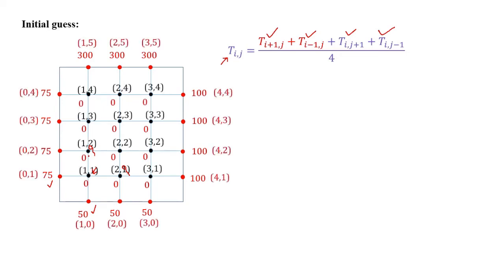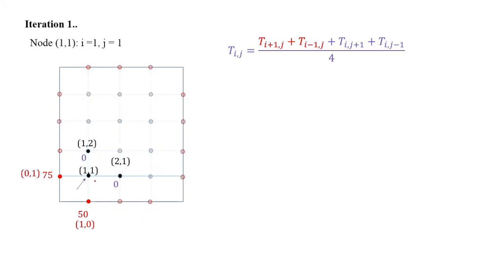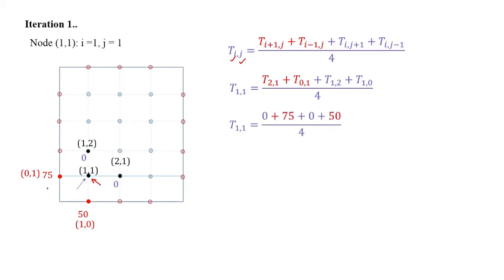Let us start iteration 1 with node (1,1). Substituting i=1 and j=1 in the equation, we get T_11 equal to T_21 plus T_01 plus T_12 plus T_10, divided by 4. The temperatures T_01 and T_10 are known from the boundary conditions, while T_21 and T_12 are taken from our initial guess. Substituting these values, we get T_11 equal to 31.25 degrees Celsius.